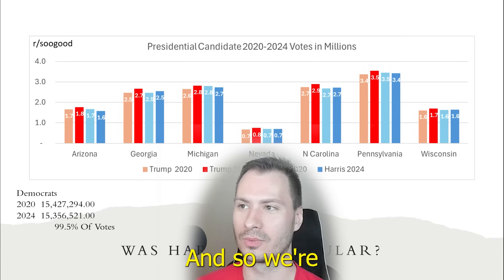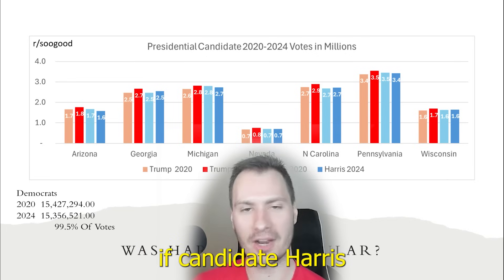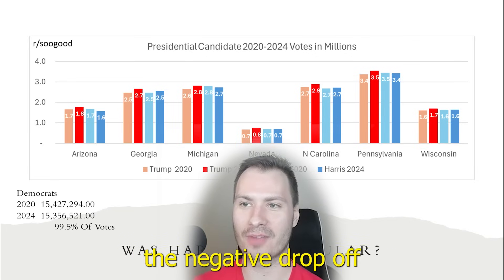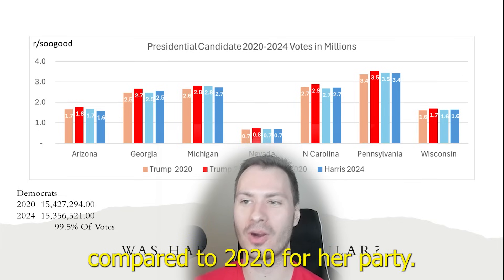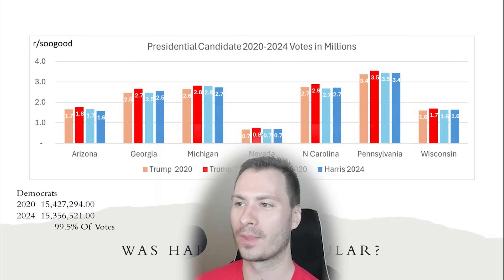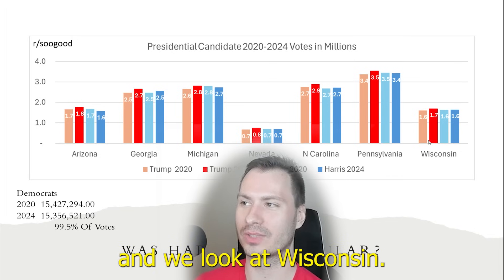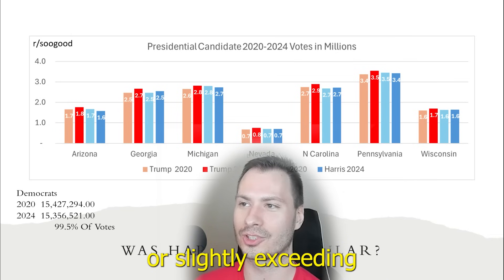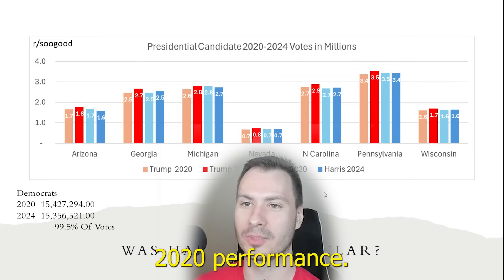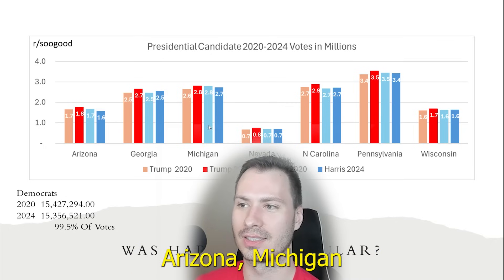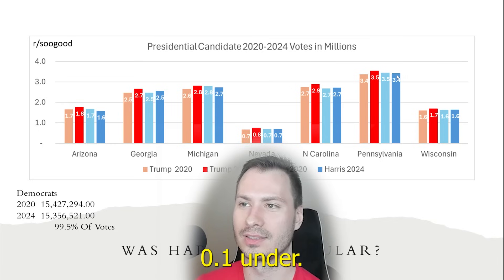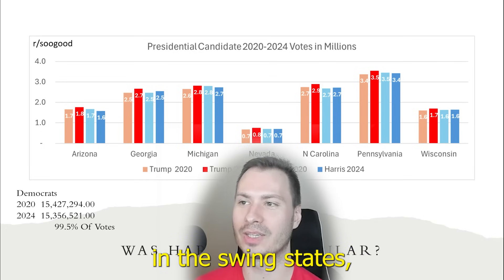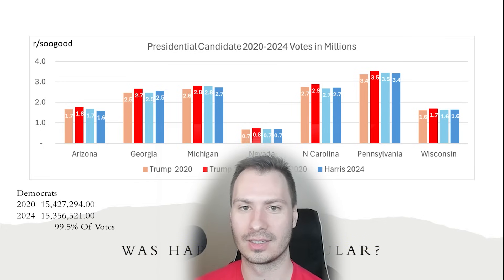Let's look into the popularity theory. If candidate Harris was unpopular in the swing states, we should see that she didn't get the same turnout compared to 2020 for her party. What this shows is: if we look at Georgia, Nevada, North Carolina, and Wisconsin, we see that Harris is actually matching or slightly exceeding Biden's 2020 performance. And in Arizona, Michigan, and Pennsylvania, she's only 0.1% under. So does this show that Harris was an unpopular candidate in the swing states where we're seeing this negative drop-off vote percentage? It doesn't.